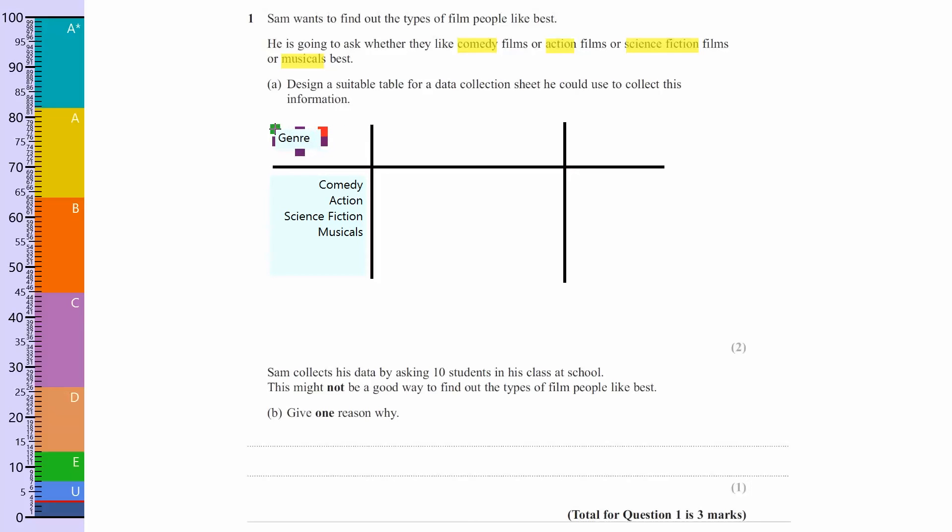Now, to get the full marks, you didn't need to put genre there, but I think it's always best to do too much than too little. Now what I want them to do is do tallies in here, but we don't need to actually do the tallies. We're just doing the data collection sheet, we're not filling it in.